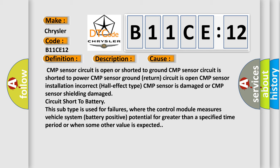Circuit short to battery. This subtype is used for failures where the control module measures vehicle system battery-positive potential for greater than a specified time period or when some other value is expected.